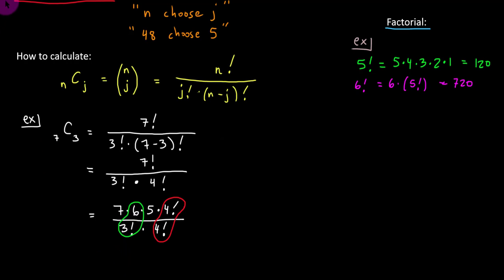So, all that is left is 7 times 5, which is 35. That would be our solution. Let's interpret this value of 35 being the solution to 7 choose 3. I'm going to draw a few faces here.